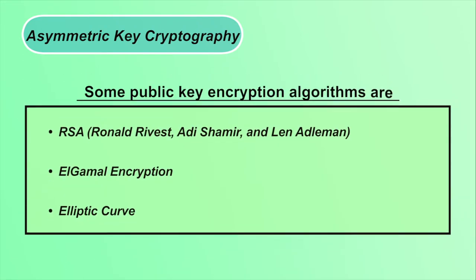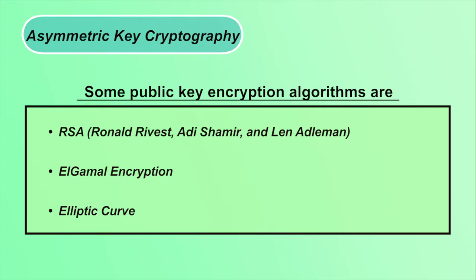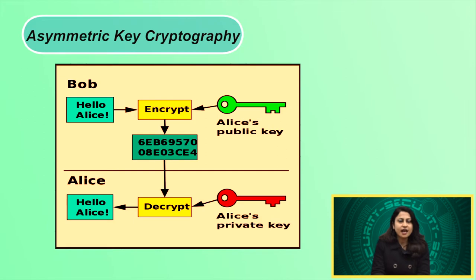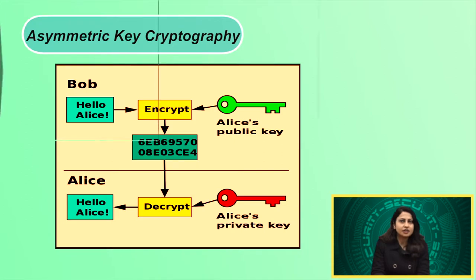Public key encryption algorithms include RSA (named after Ronald Rivest, Adi Shamir, and Len Adleman), ElGamal encryption, and elliptic curve. In this figure, you can see that the original text is encrypted using the public key of the receiver and decrypted using the private key of the receiver. Private keys should be confidential and public keys should be available to all. There is no concept of sharing the key unlike symmetric key cryptography.